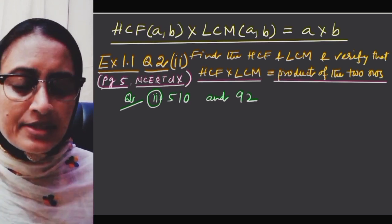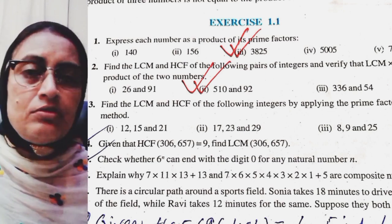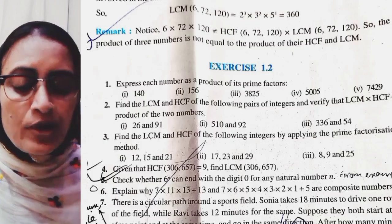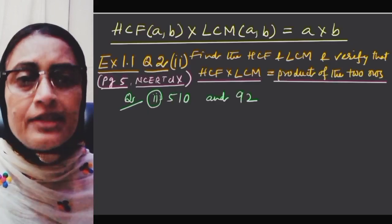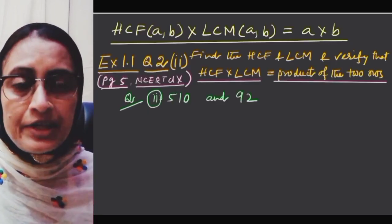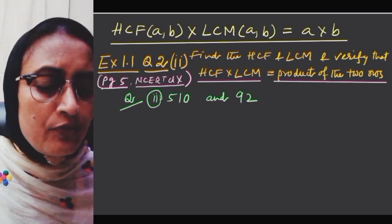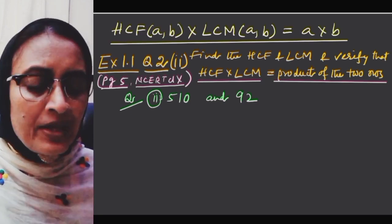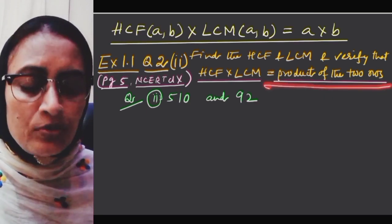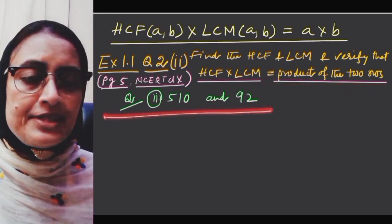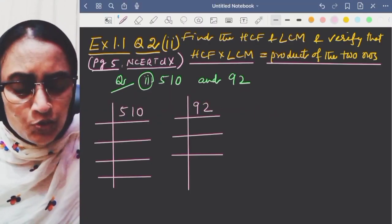This is Exercise 1.1, question 2 from the CBSE syllabus. The question says: find the HCF and LCM and verify that HCF × LCM is equal to the product of the two numbers. I will now factorize the numbers independently. The first number is 510.